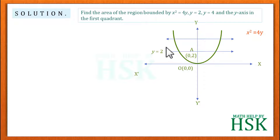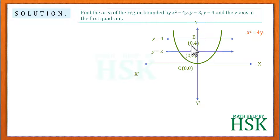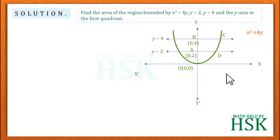Similarly, the second line y = 4 intersects the y-axis at point B, marked as (0, 4). I mark the other corners as C and D, and the required shaded area is the region ABCDA.